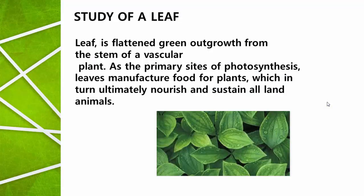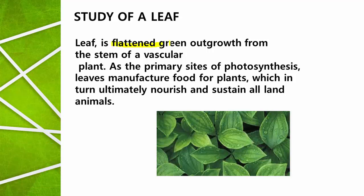What is a leaf? Leaves are green structures — that is a very common answer. But biologically, a leaf is a flattened green outgrowth from the stem of the vascular plant. In the previous video I explained about the structure of the stem; the stem contains buds at the nodal region, and from those buds the leaves are growing. So a leaf is a flattened green outgrowth from the stem of the vascular plant.